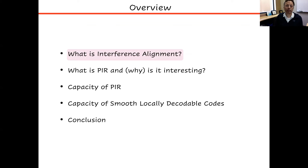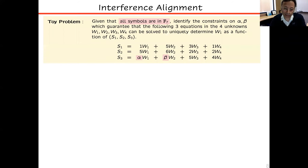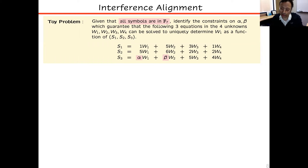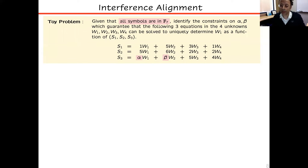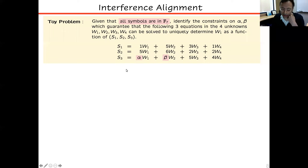Let's start with what is interference alignment. I'll explain it with a very simple toy example. Here we have three linear equations in four unknowns: w1, w2, w3, and w4. Usually we think of situations where some of the unknowns are desired and some are undesired or interference. We're assuming w1 is the desired information — from these equations I want to solve for w1. On the other hand, w2, w3, w4 are interference because they're limiting my ability to solve for w1.